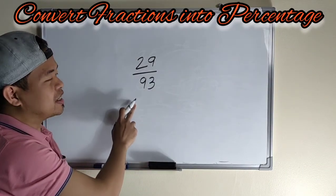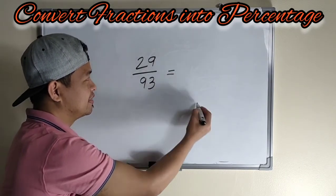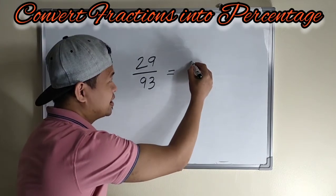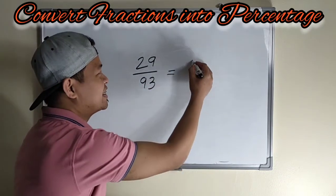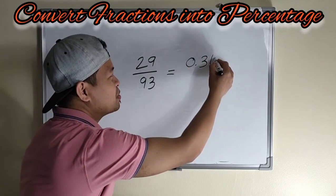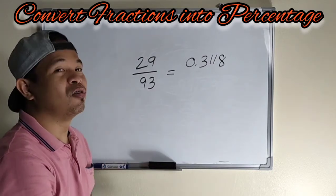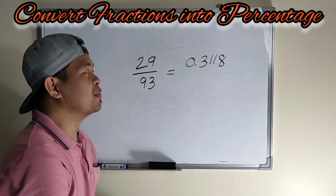So ang gagawin lang natin, 29 divided by 93 or using your calculator is 0.3118. Ayan po. Our long method of division. Makukuha nyo to. So 0.3118.